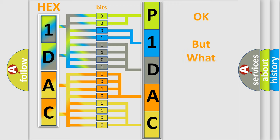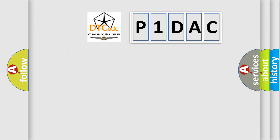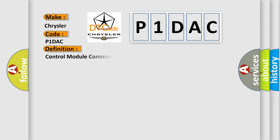We now know in what way the diagnostic tool translates the received information into a more comprehensible format. The number itself does not make sense to us if we cannot assign information about what it actually expresses. So, what does the diagnostic trouble code P1DAC interpret specifically for Chrysler car manufacturers? The basic definition is: control module communication bus off.